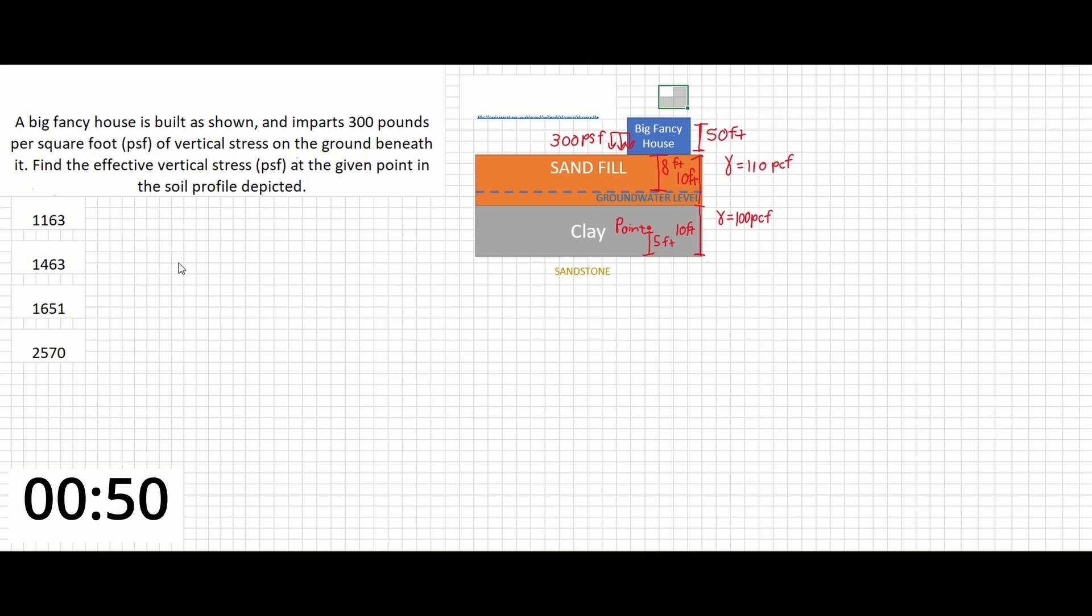All we need to do is find the effective vertical stress at point A. The first thing to note is that stress increases both with the depth and the density or unit weight of whatever soil is above that depth.